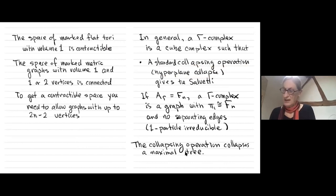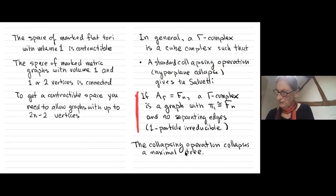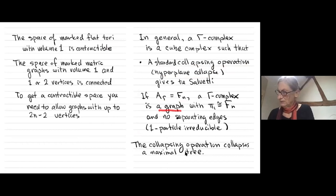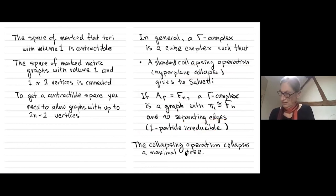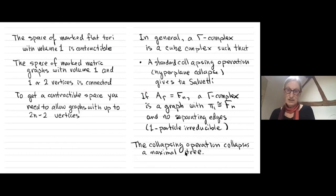If my group is a free group then a gamma complex is just a graph with the right fundamental group and no separating edges — it's 1-particle irreducible. The collapsing operation in this case is just collapsing a maximal tree to get back to a rose.